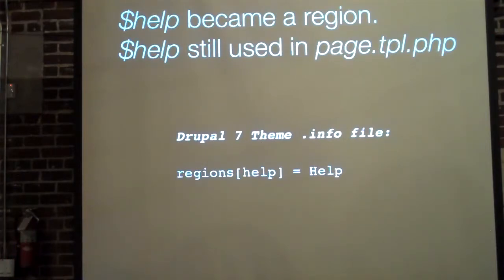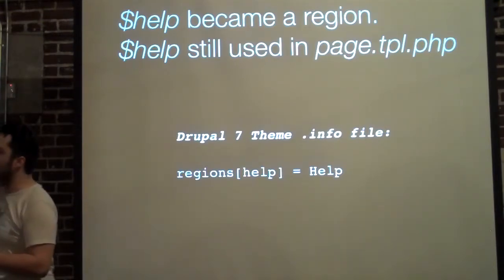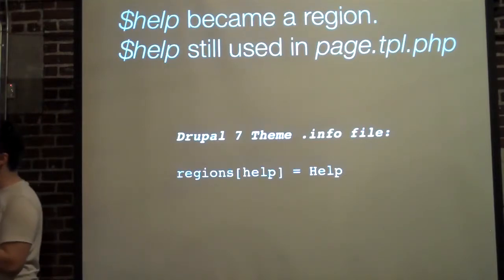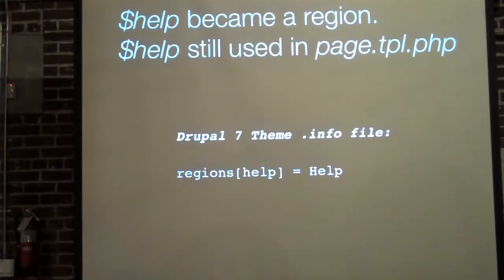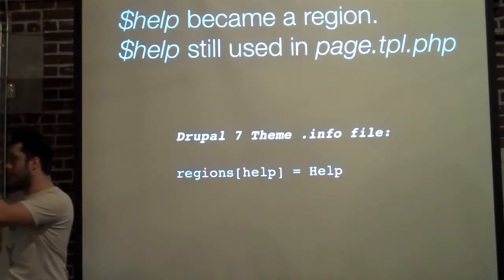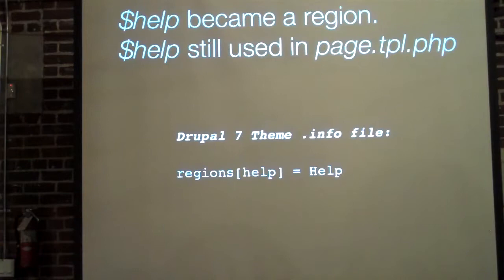You can move the help region around if you really wanted to. Also, you wouldn't just expect your page template to have a help variable — since it's a region, you can now supply other blocks into that area. If you wanted a more graphical type of help message, you can have a custom block appear in that region and literally overwrite all that help message.